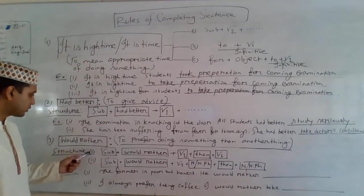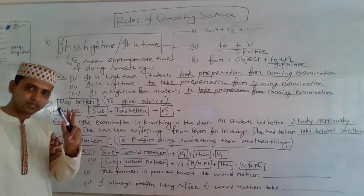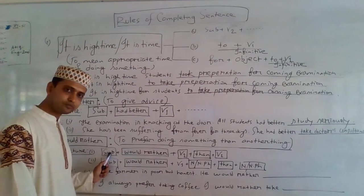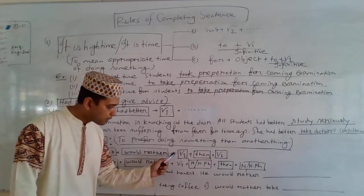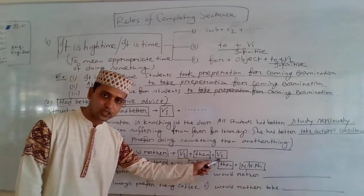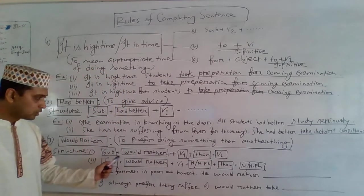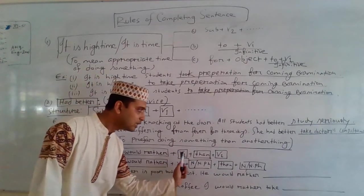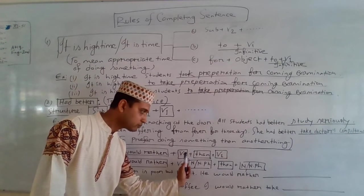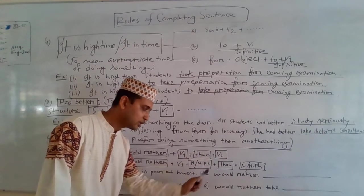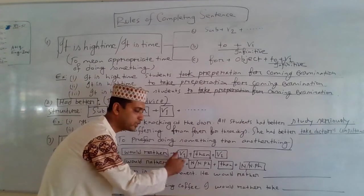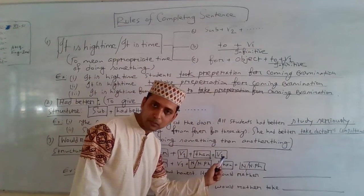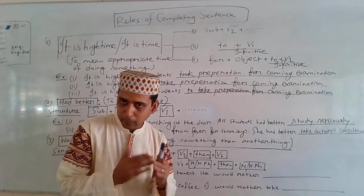The structure of 'would rather' has two forms. Structure 1: Subject + would rather + V1 + than + V1. Before 'than' you use V1, and after 'than' you also use V1 — this is called parallel structure. Structure 2: Subject + would rather + V1 + noun or noun phrase + than + noun or noun phrase. Before 'than,' if you get a noun or noun phrase, after 'than' you will also use a noun or noun phrase.